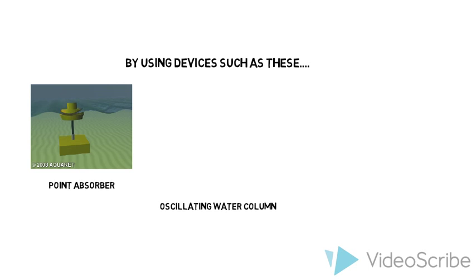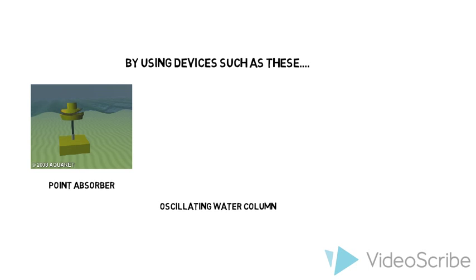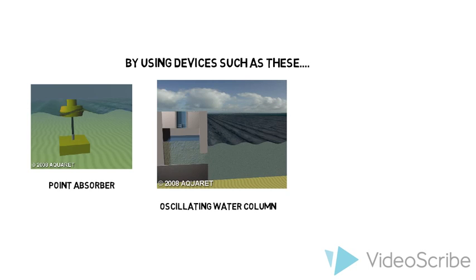Here, an oscillating water column encloses a column of air on top of a column of water. Waves then cause the water column to rise and fall, which in turn compresses and decompresses the air column. The trapped air is allowed to flow through a turbine. The rotation of this turbine is then used to generate electricity.